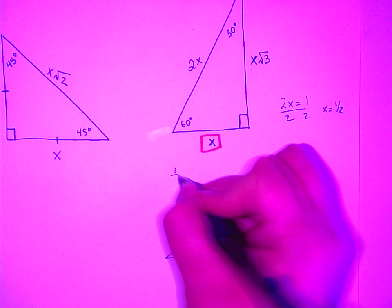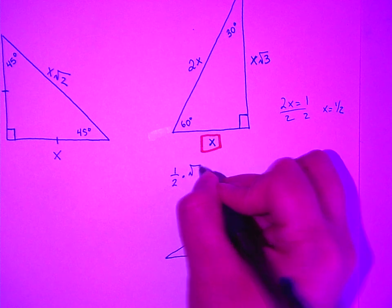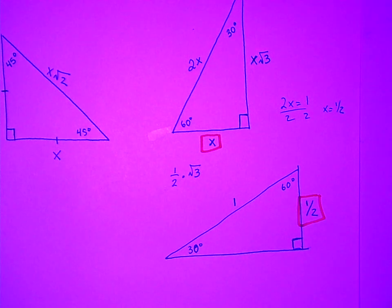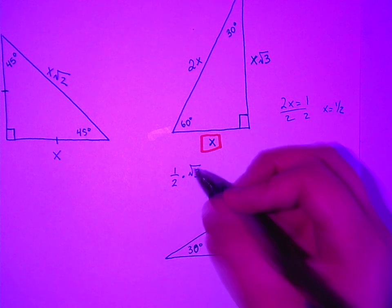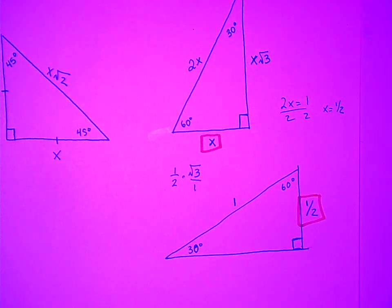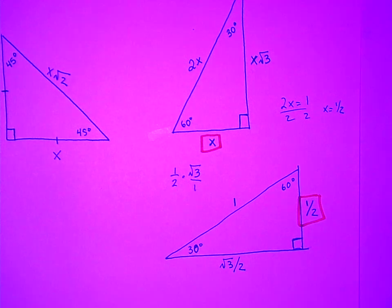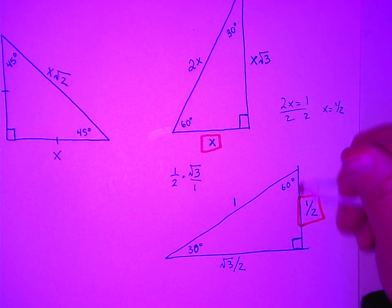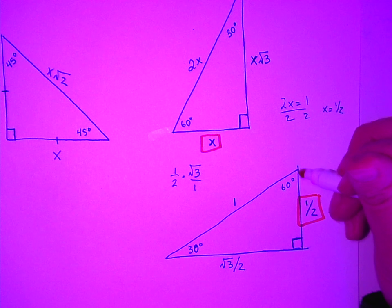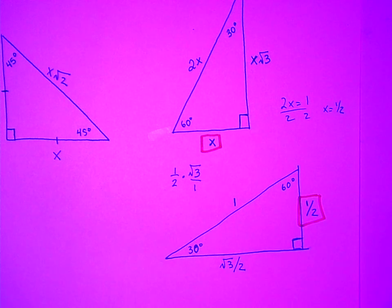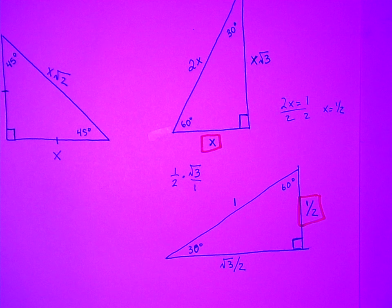You don't need a calculator. One half times the square root of 3. How do I multiply two things where one thing is a regular number and one thing is a fraction? Just put this over 1. The square root of 3 over 2. So this distance down here is square root of 3 over 2, and this distance right here is one half, and that radius is 1.